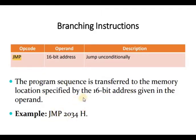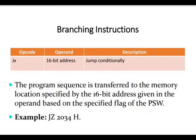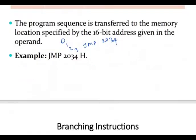Normally if we execute instructions 0, 1, 2, 3 sequentially, then at the third instruction we encounter JMP — for example, JMP 2034. The program jumps to memory location 2034. This is an example of an unconditional JMP.